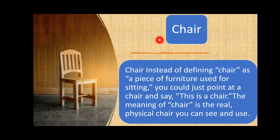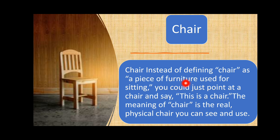Another example: 'chair.' Instead of defining 'chair' as 'a piece of furniture used for sitting' — because then you'd have to define 'furniture,' which would include table, couches, chair — and again you get a circular definition. Instead, you don't have to say that; you could just point at the chair and say 'this is a chair.' The meaning of 'chair' is the real physical chair you can see and use in front of you.